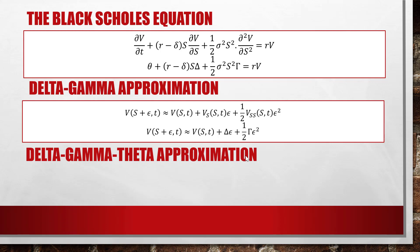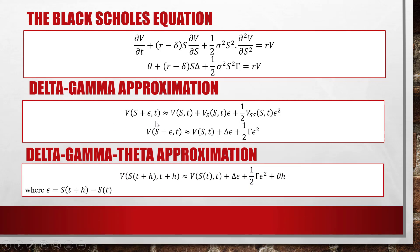For a more complicated case when both S and t change: letting H be the change in t, S(t+H) is the stock at time t+H. When we consider the Taylor expansion accounting for both variables, we get V approximately equal to V(S,t) plus Delta*epsilon plus one-half*Gamma*epsilon-squared plus Theta*H, where epsilon is the change in the stock price over time. These are the formulas used to approximate the option price.